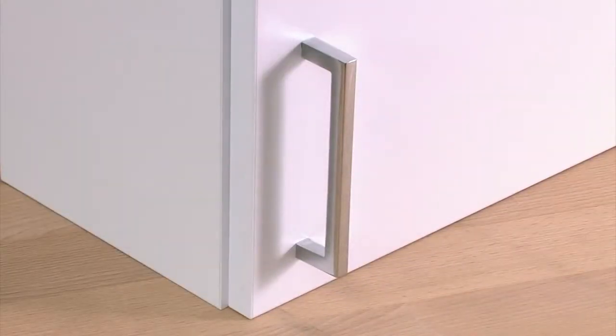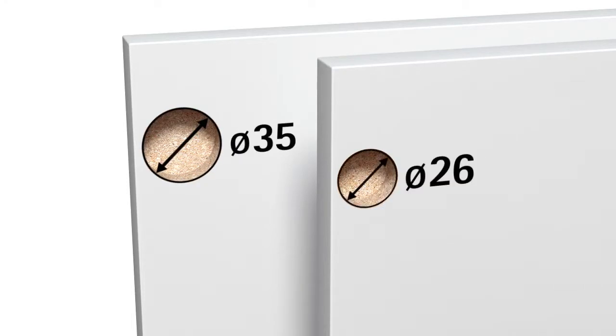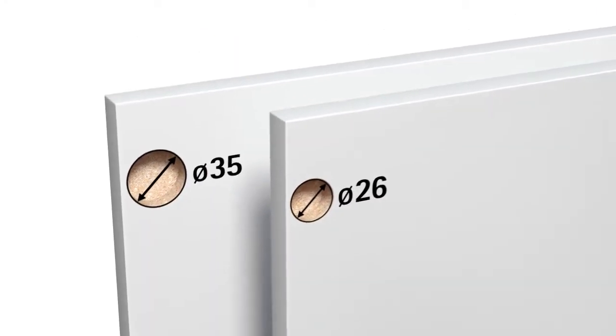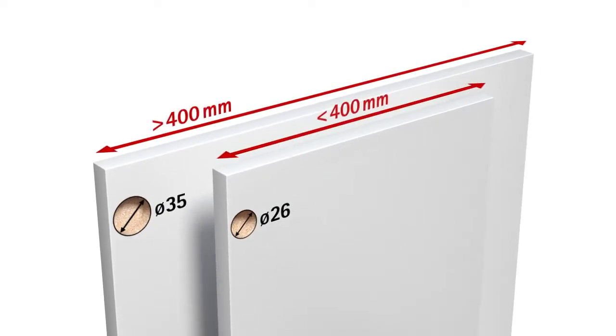But how many hinges do you need in which size? As a rule of thumb, use small hinges with 26mm cups for doors in widths up to 400mm and hinges with 35mm cups for wider doors.